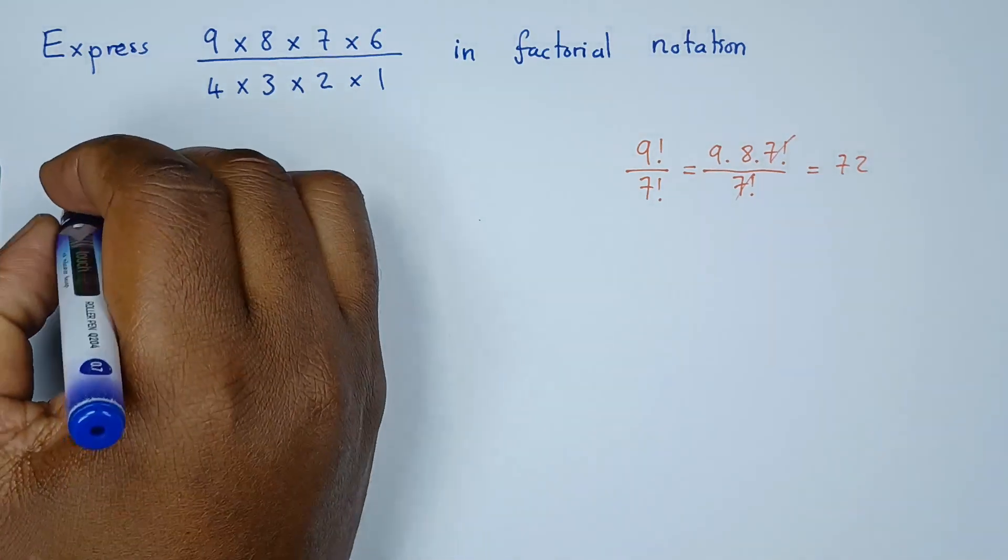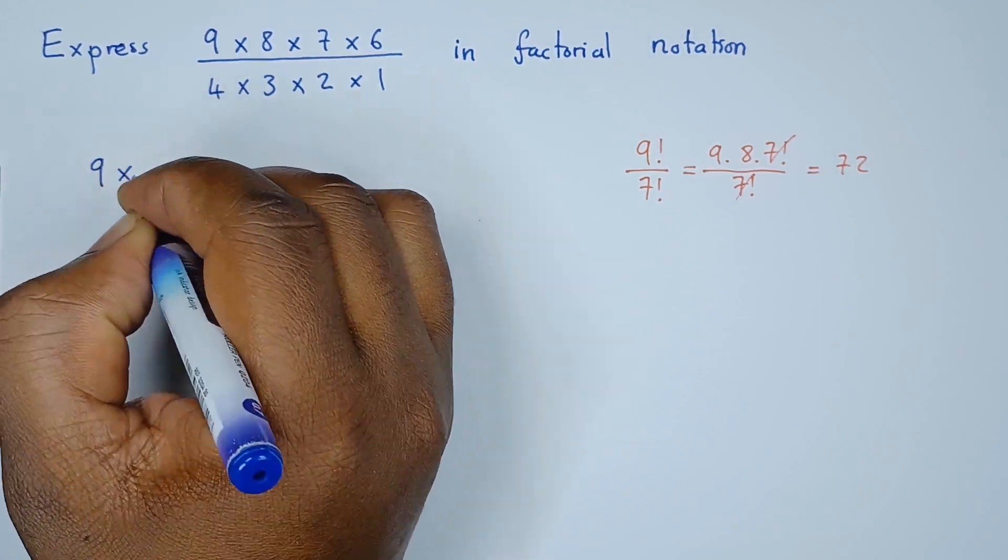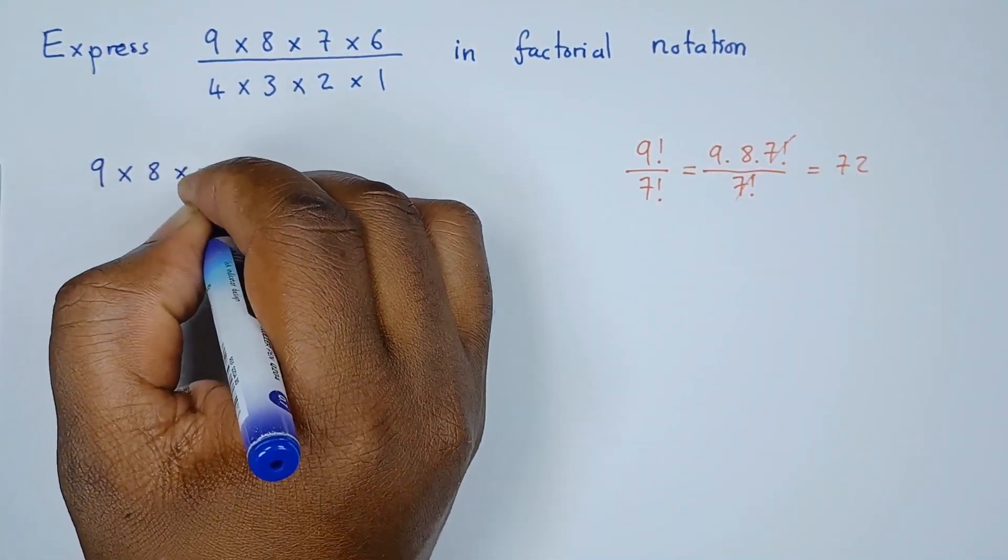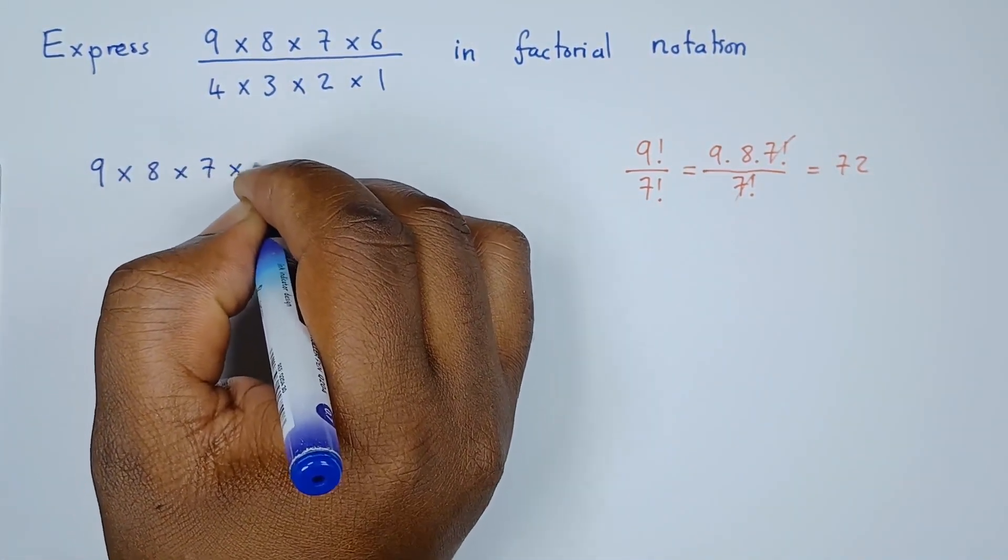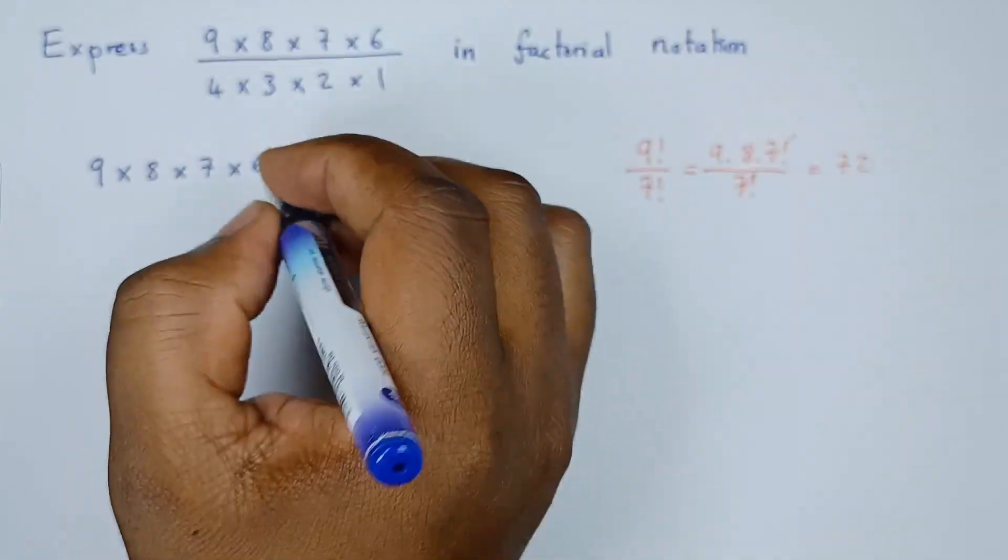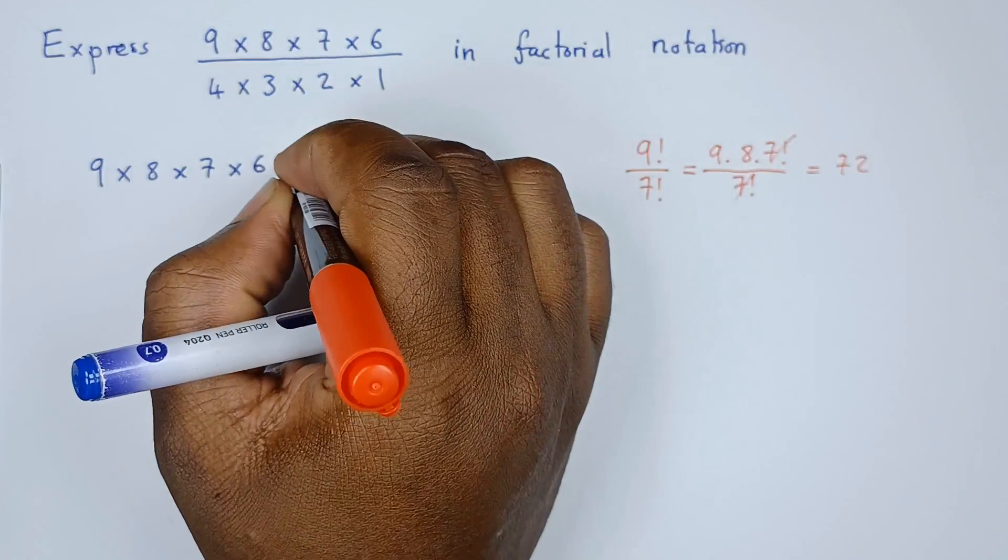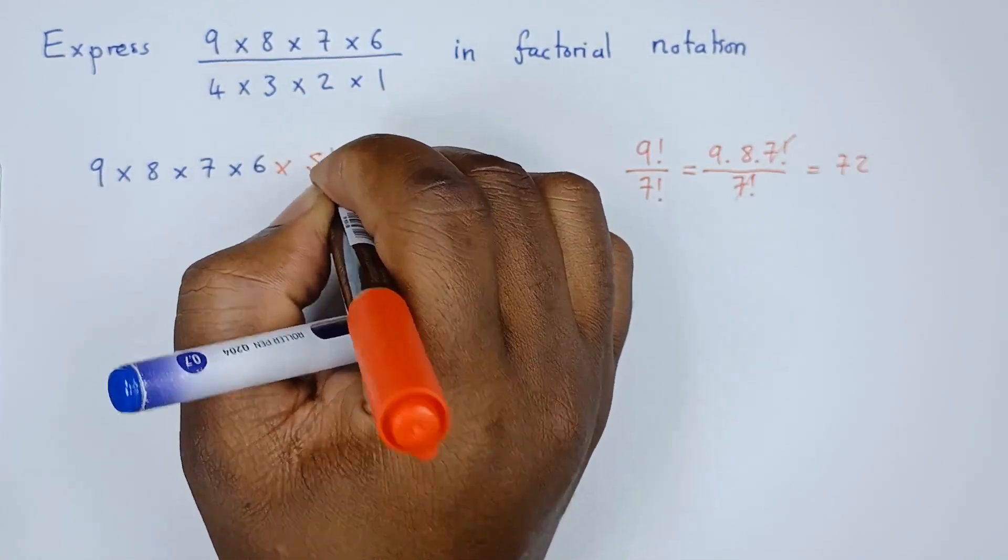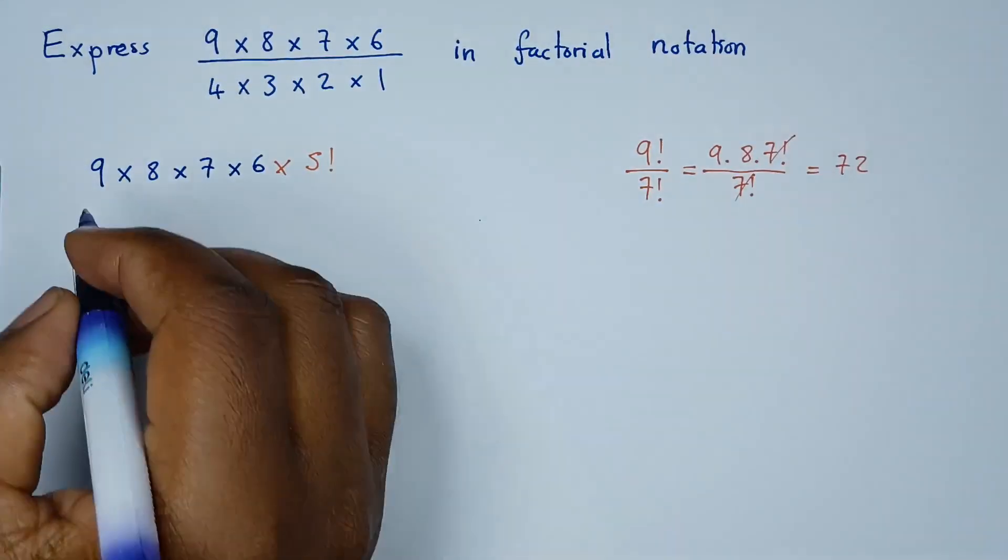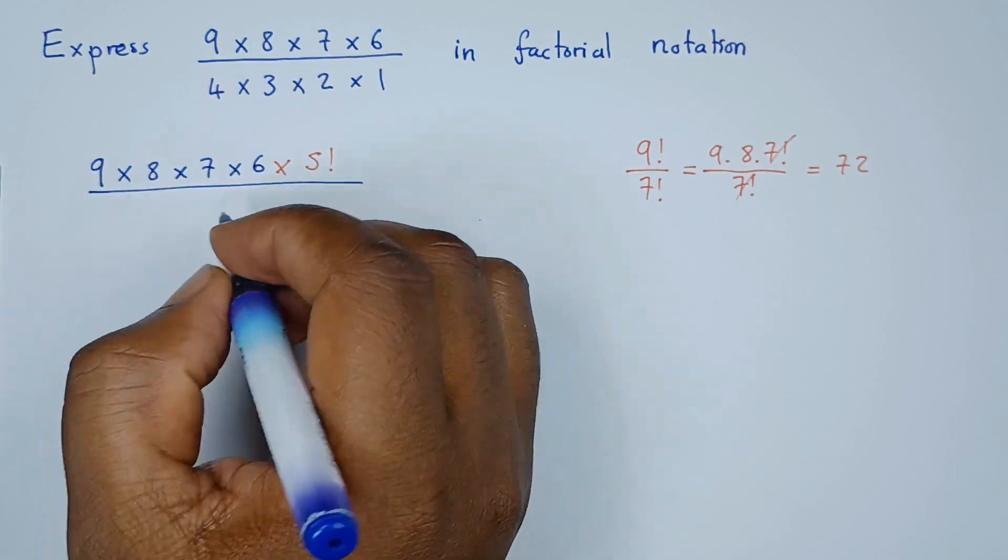So we have 9 times 8 times 7 times 6. Now if that's the case, it simply means that there was a times 5 factorial. Now remember everything is over, so since that was a factorial, where did it go?